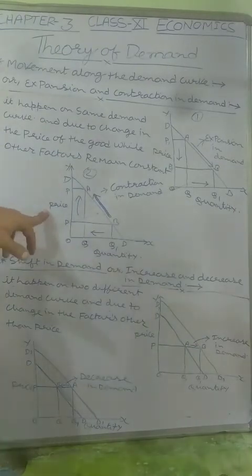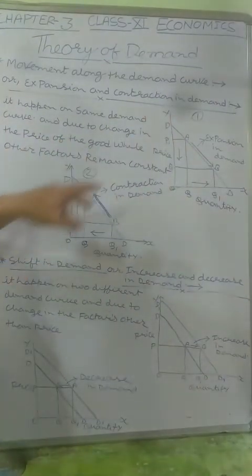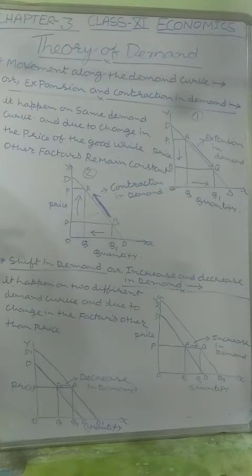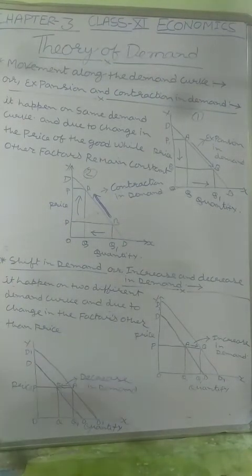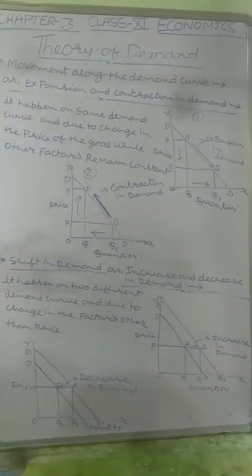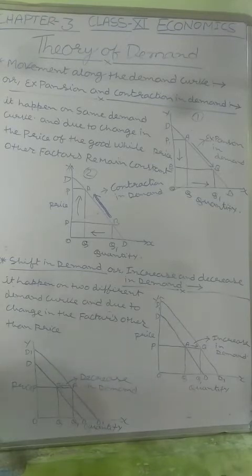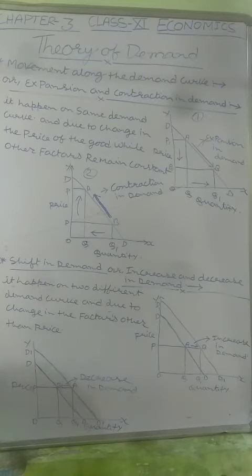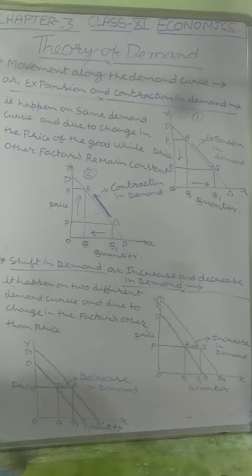Contraction in demand means a shrinking or संकुचन of demand, and expansion in demand means a विस्तार of demand. Both these cases — expansion and contraction in demand — together constitute the case of movement along the demand curve. The two most important features are: first, it happens on the same single demand curve; and second, it happens only and only due to change in price — whenever there is a decrease in price there must be expansion, and whenever there is an increase in price there must be contraction in demand.